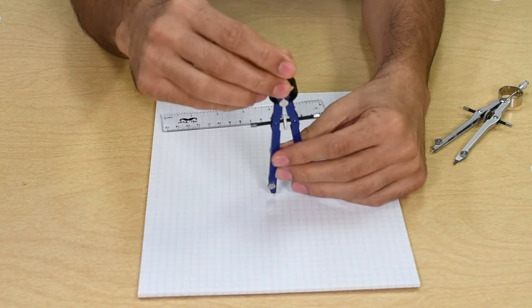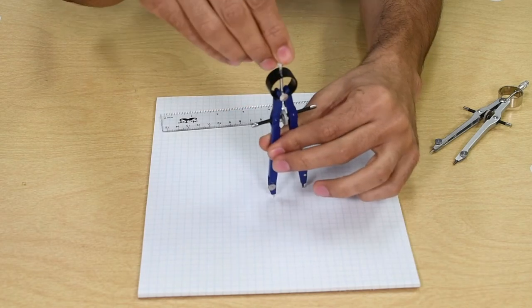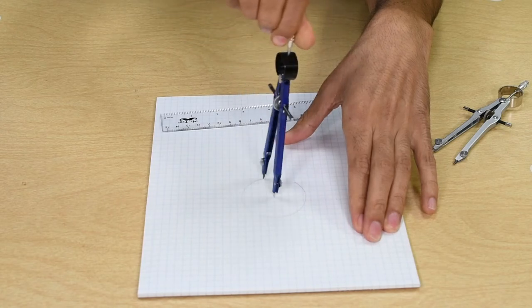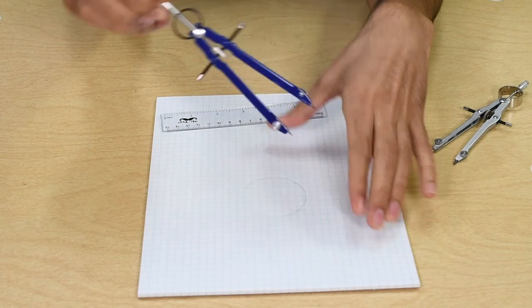Now hold the compass at the top, not from the legs, and place the tip of the needle on the center of where you want to draw your circle. Rotate the top while pushing the legs down to draw the circle.